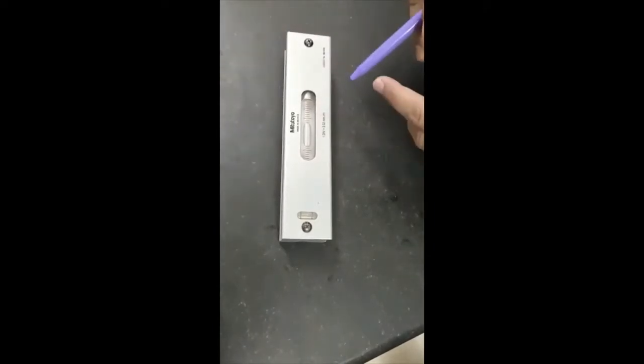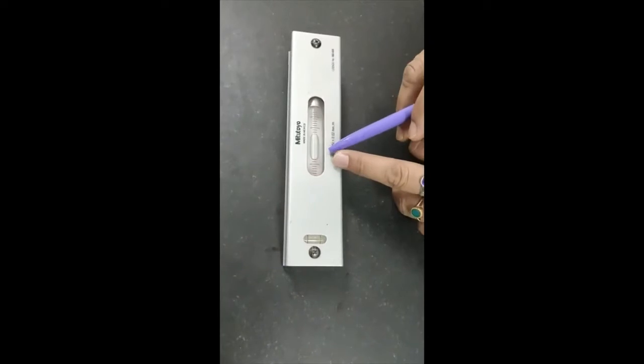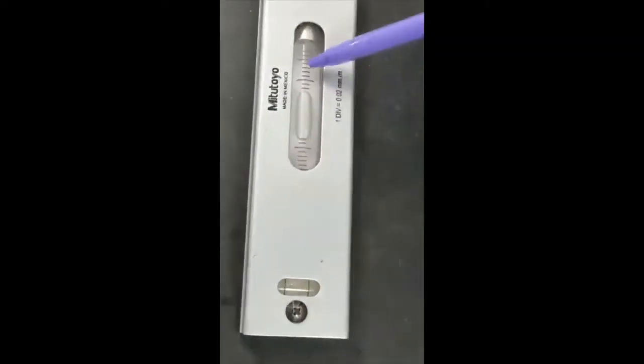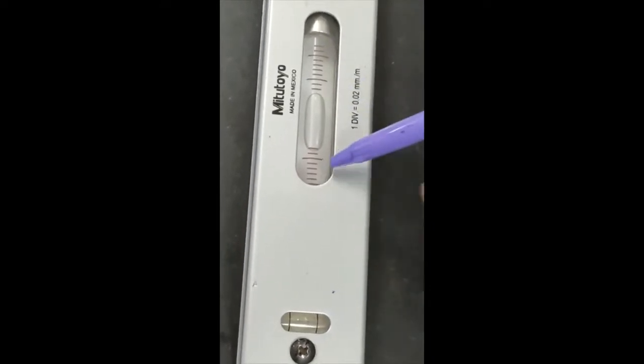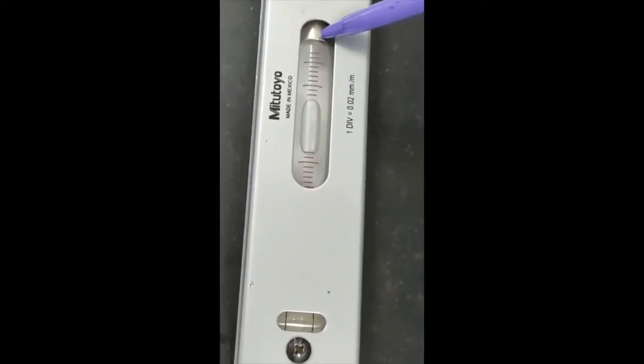Now I will show the flatness of this surface plate. I will first set zero position. You have seen there are divisions on this side and this side also. Suppose left side division is my positive and right side division is my negative.